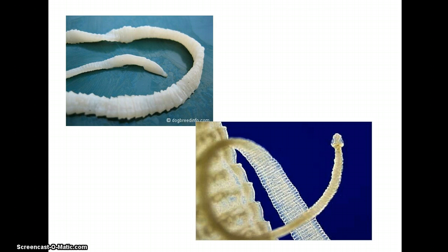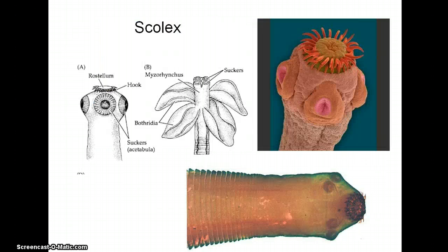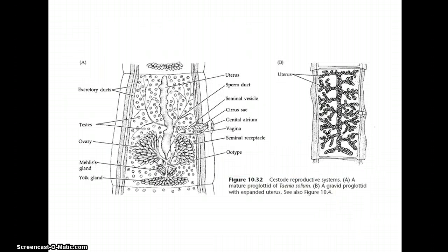These guys are definitely monoecious — each proglottid contains both testes and ovary. Inside the proglottid is basically just reproductive structure; there's no other kinds of systems here. There may be some nerve or sensory cells, but certainly no digestive tract at all, very little musculature, very little anything else other than reproductive systems. So we have a uterus, ovary, testes, and a genital atrium or opening.